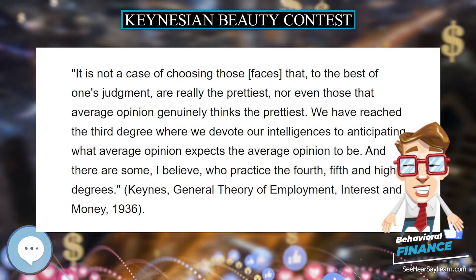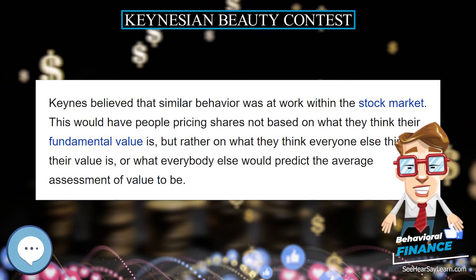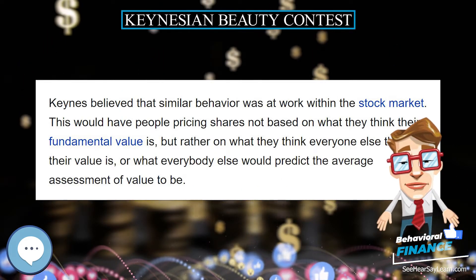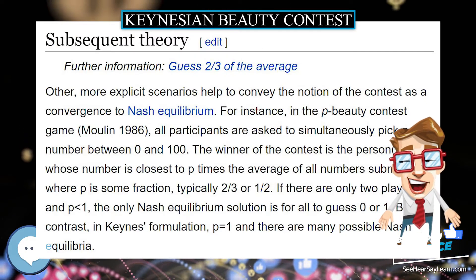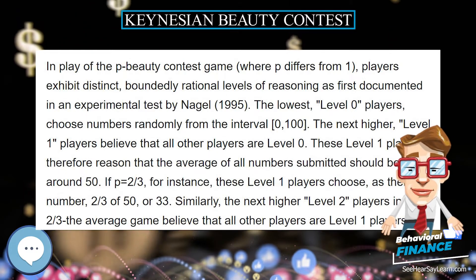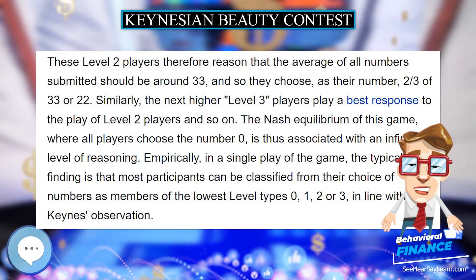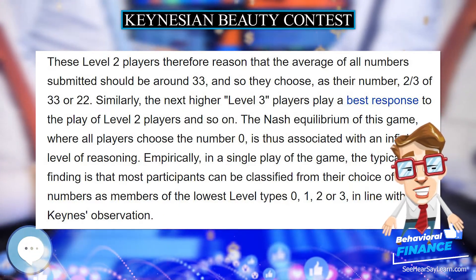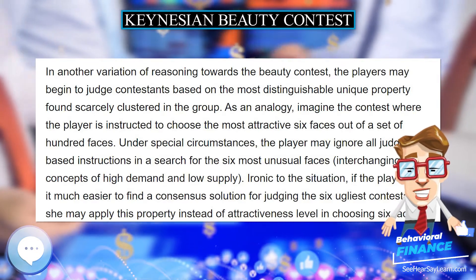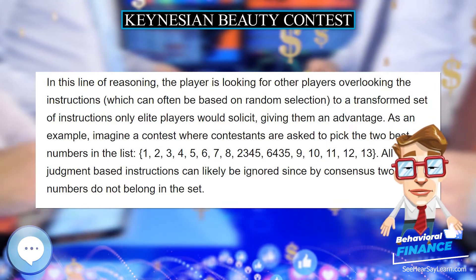Keynes described the action of rational agents in a market using an analogy based on a fictional newspaper contest, in which entrants are asked to choose the six most attractive faces from a hundred photographs. Those who picked the most popular faces are then eligible for a prize. A naive strategy would be to choose the face that, in the opinion of the entrant, is the most handsome. A more sophisticated contest entrant, wishing to maximize the chances of winning a prize, would think about what the majority perception of attractiveness is, and then make a selection based on some inference from their knowledge of public perceptions.